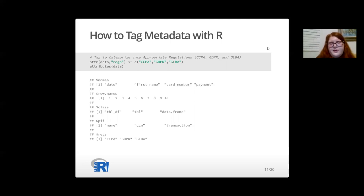Similarly to the code on the last slide, we can add a reg, which is short for regulation, attribute to our data object through the attr() command and add the values CCPA, GDPR, and GLBA to represent the regulations that this dataset falls under. We can also verify that this reg attribute was successfully added to our data object through the attributes() command.